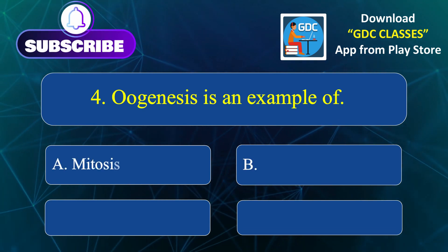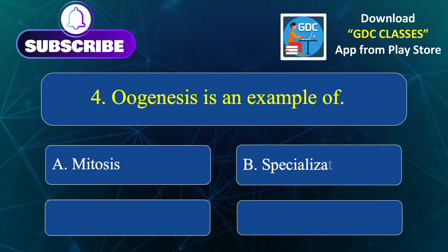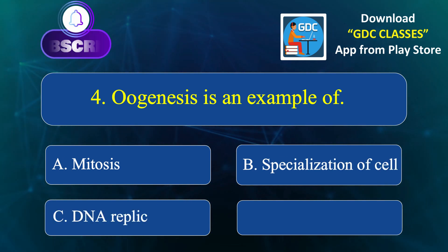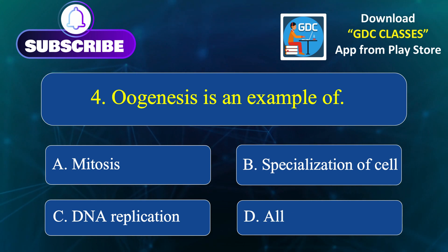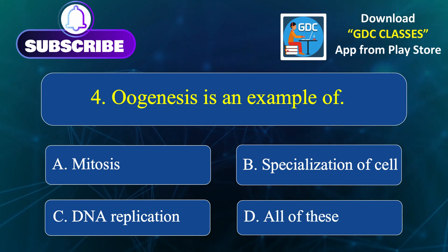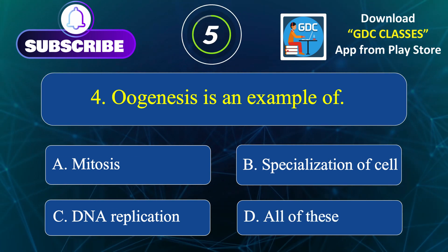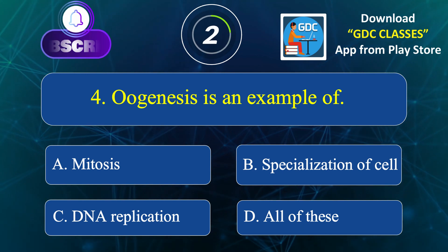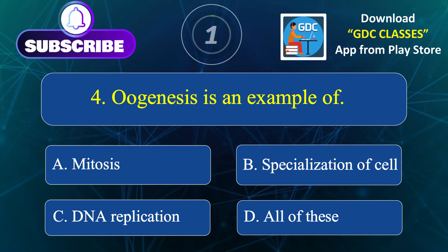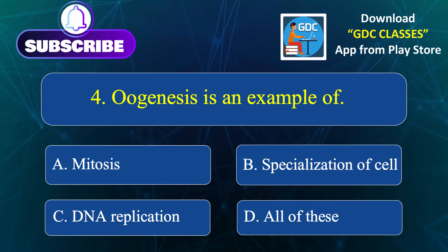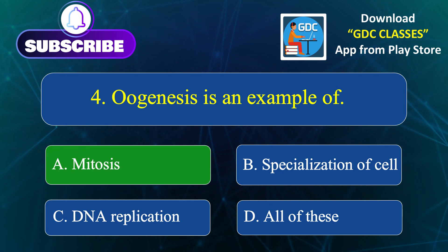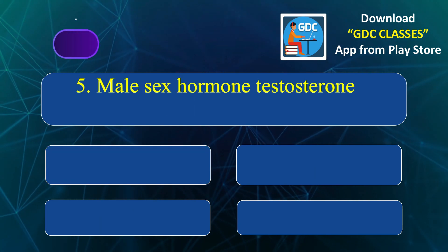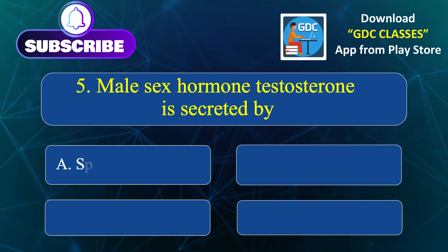Oogenesis is an example of: Option A. Mitosis, Option B. Specialization of cell, Option C. DNA replication, Option D. All of these. Correct answer is Option A: Mitosis.